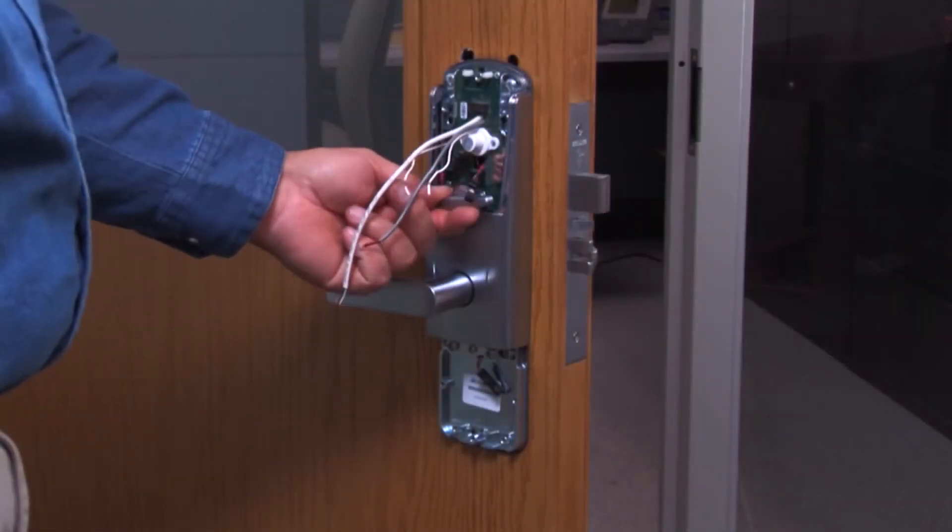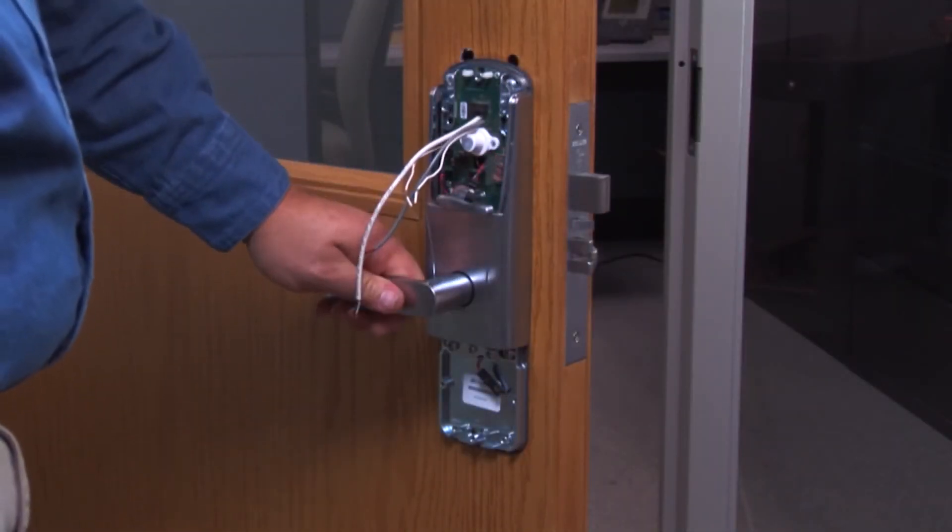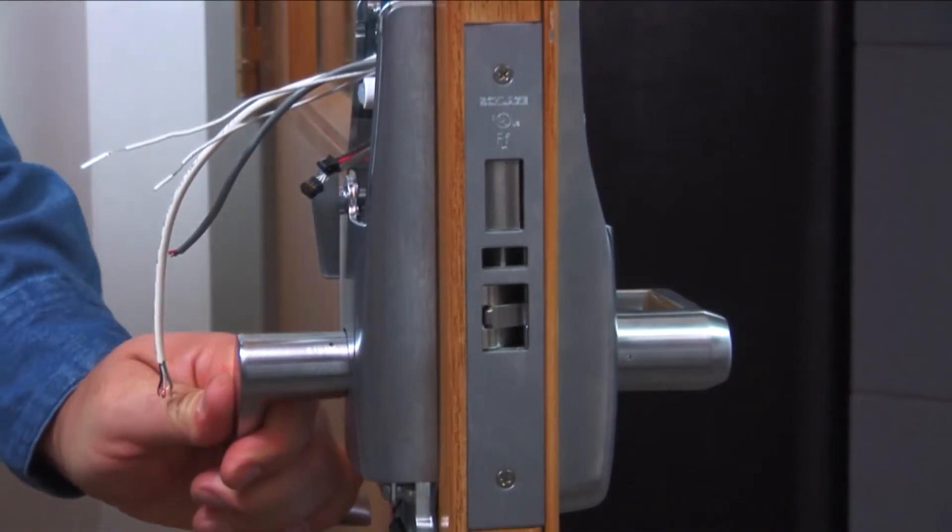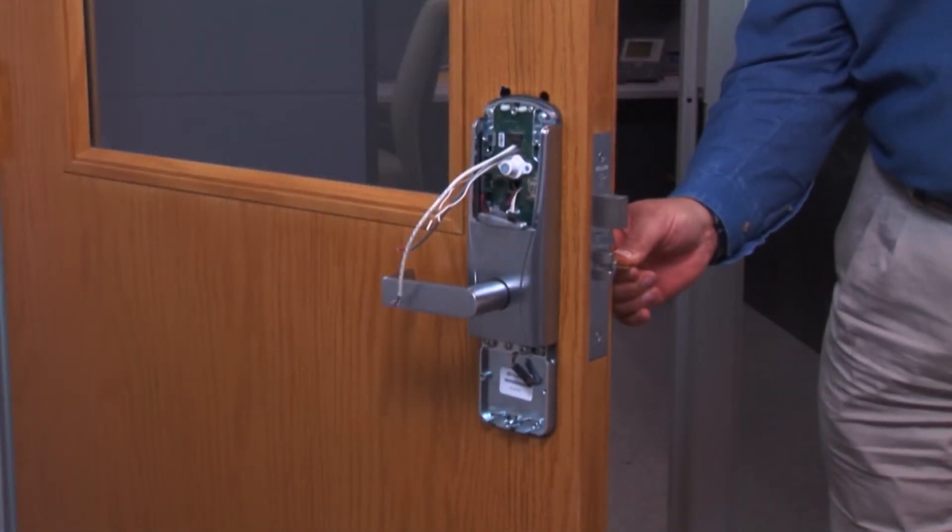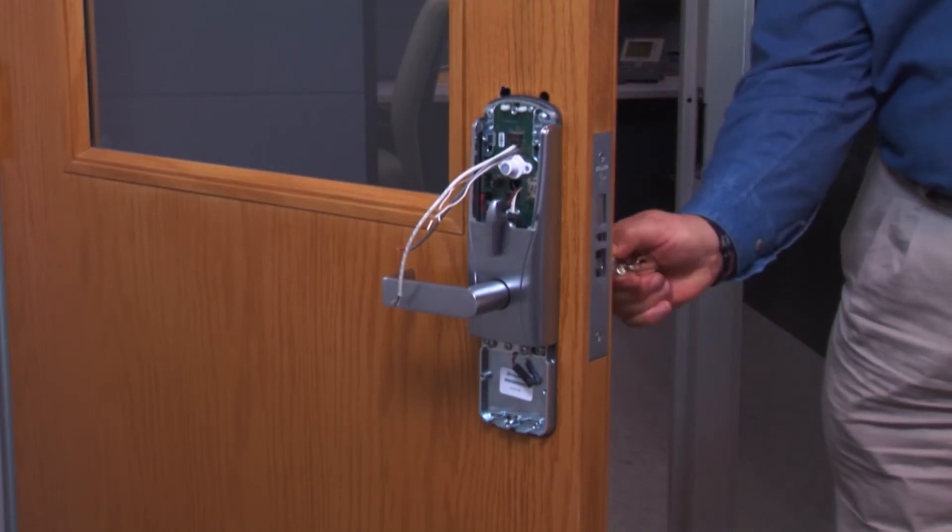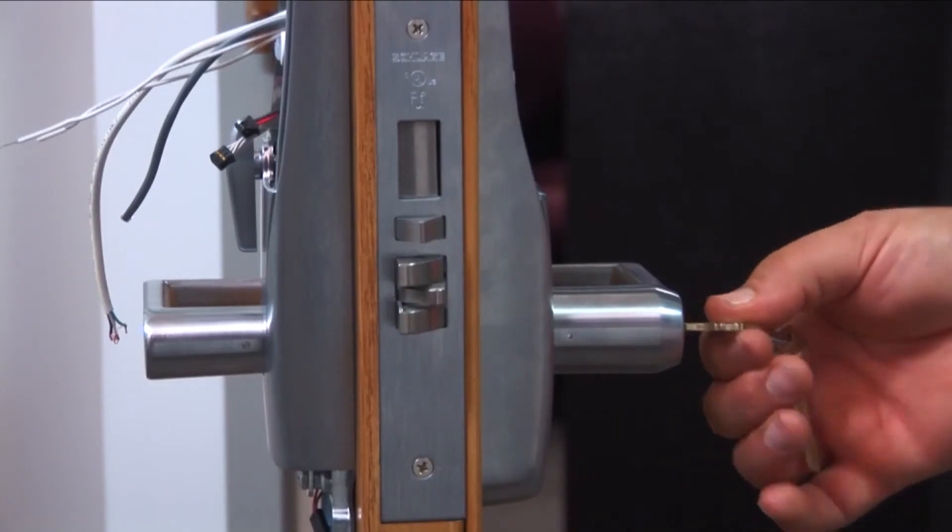To check for correct mechanical operation, depress the inside lever and make sure the latch and deadbolt fully retracts. On the outside lever, insert the key and turn to verify latch and deadbolt retraction.